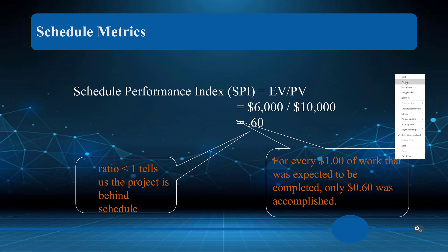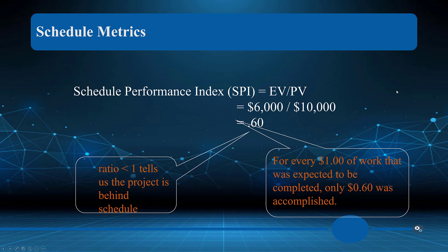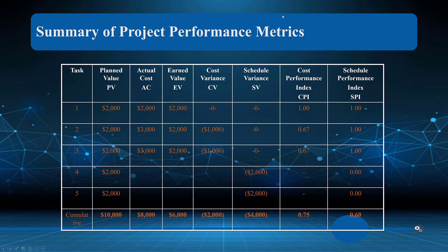The negative four thousand value tells us the project is behind schedule. When we calculate the schedule performance index (SPI) by dividing the same two numbers, we get 0.60 — meaning for every dollar of work expected to be completed, only sixty cents was actually accomplished. We're spending forty cents that is not providing true value to the project.